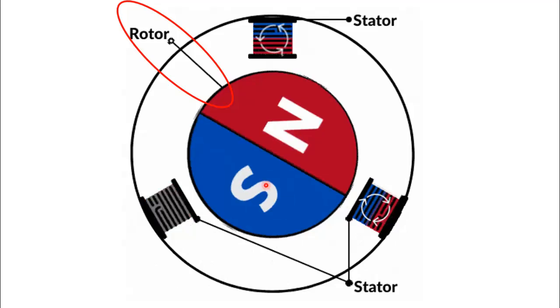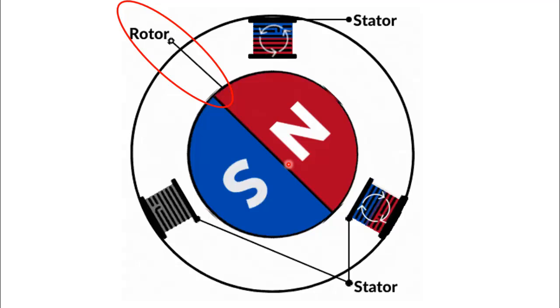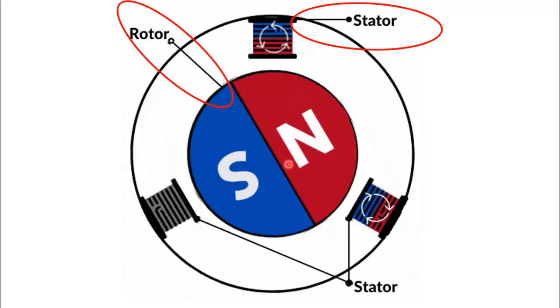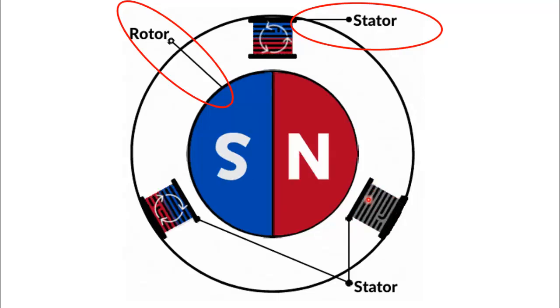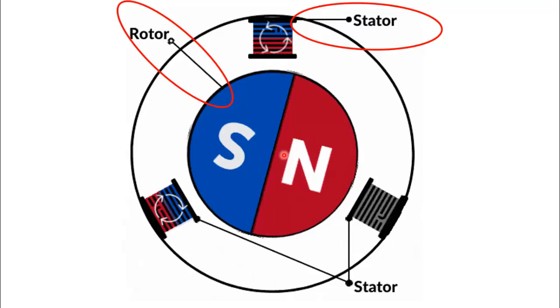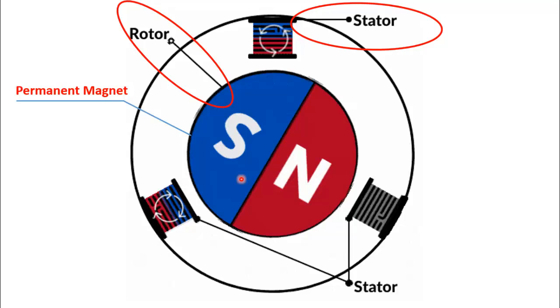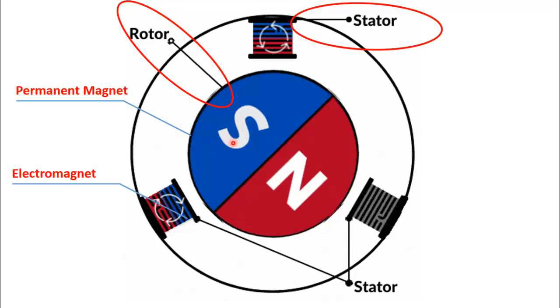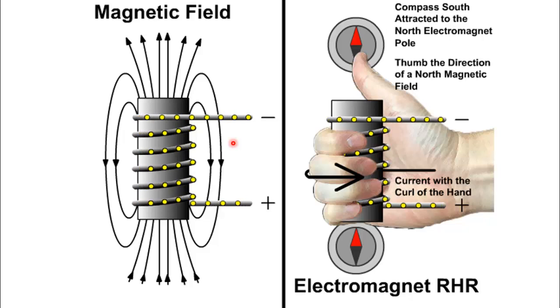The stator of a BLDC motor is made up of stacked steel laminations to carry the windings. Now we have two parts: the windings on the stator and the permanent magnet on the rotor. We also have two different types of magnets—the permanent magnet on the rotor and the electromagnet on the stator.